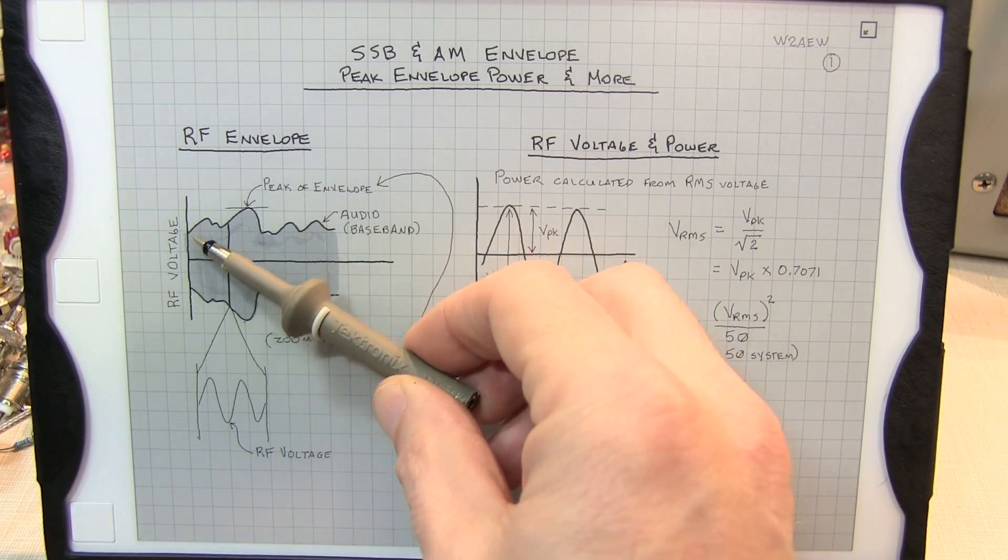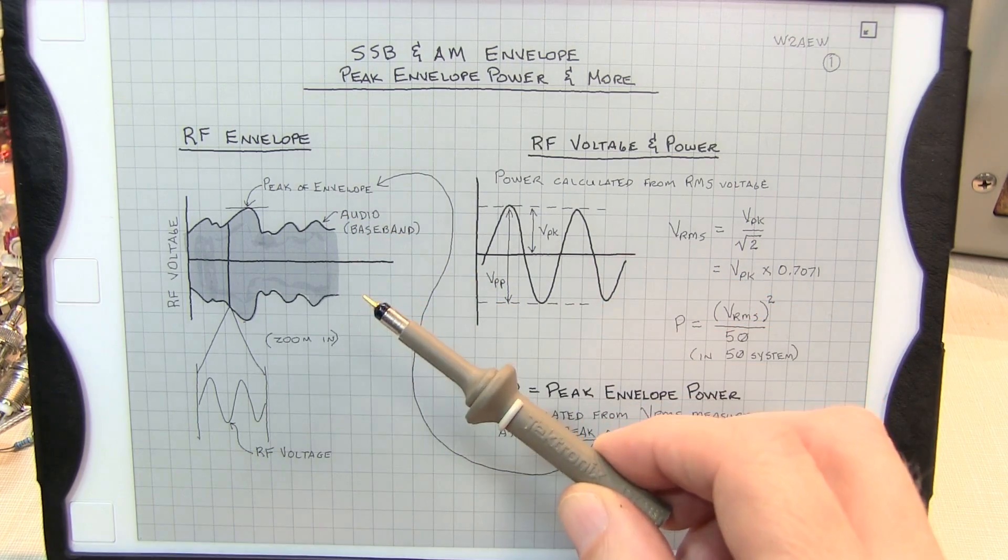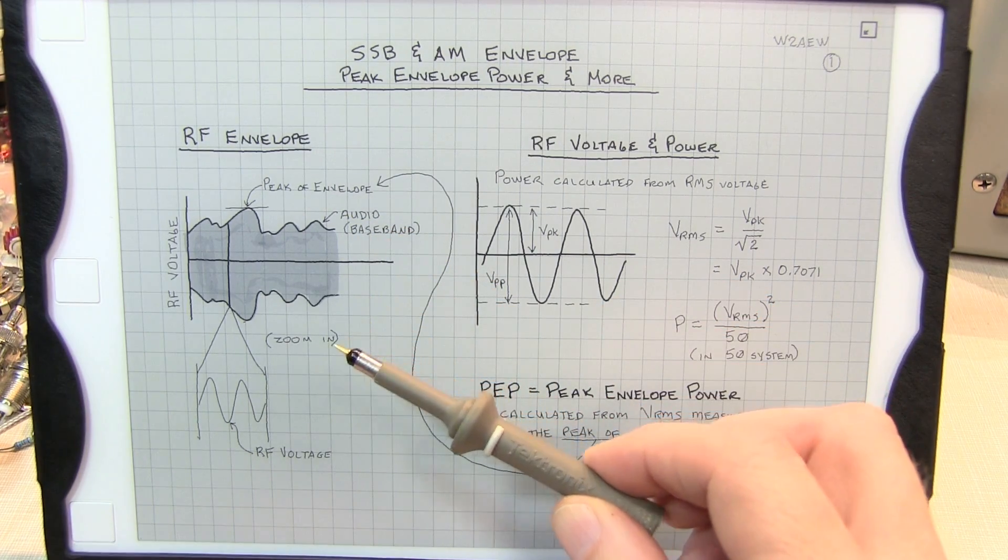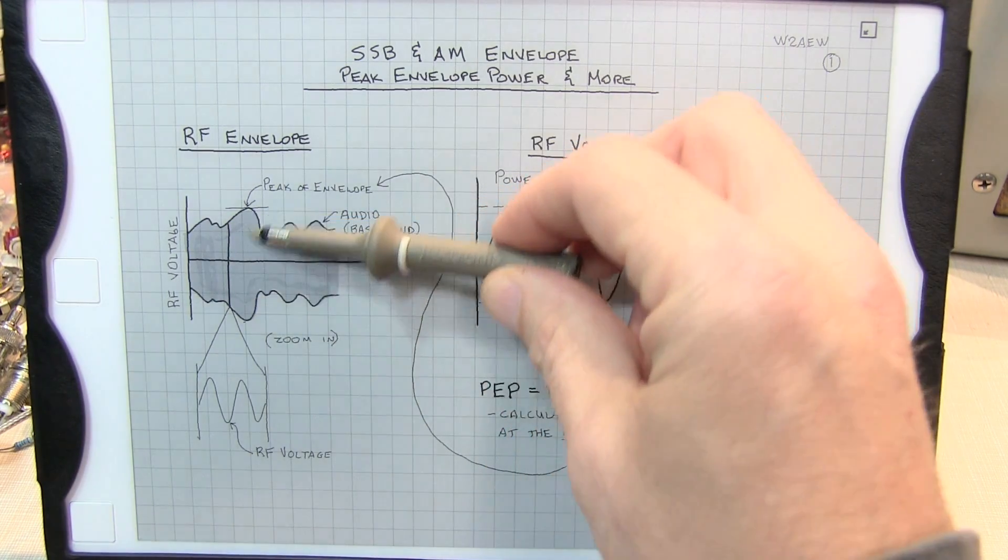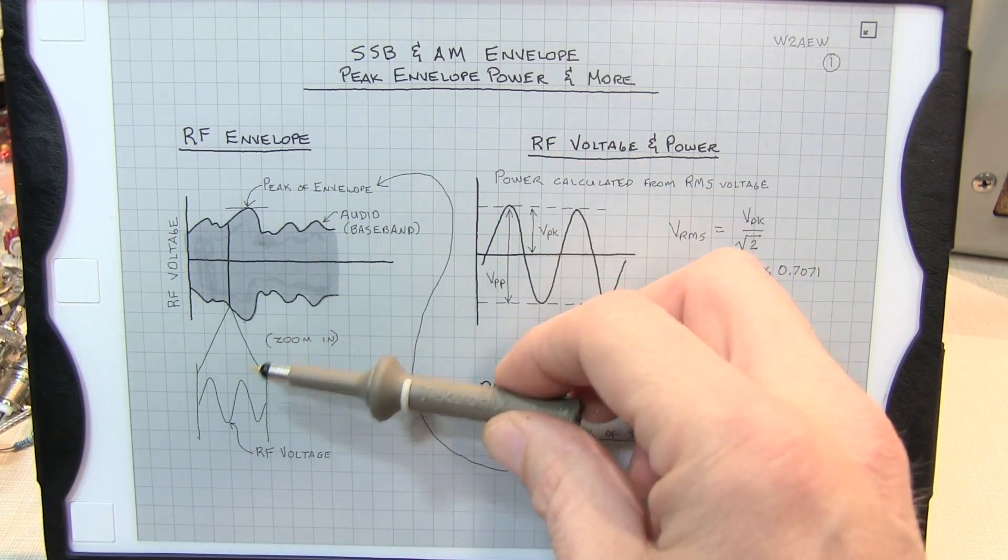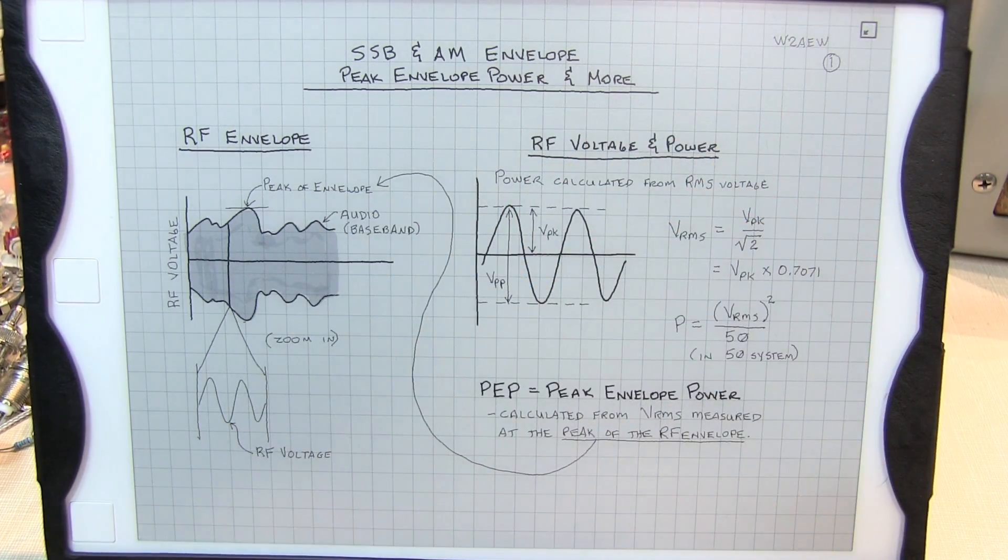In most cases, the envelope of the signal is related to the audio or baseband signal that's being modulated onto the RF signal itself, and the largest excursion, the largest magnitude of that envelope, the largest magnitude that the RF voltage goes to, is called the peak of the envelope.